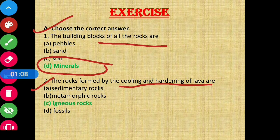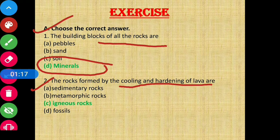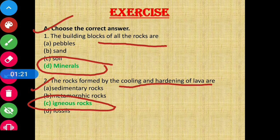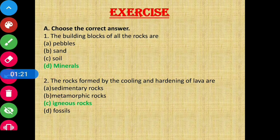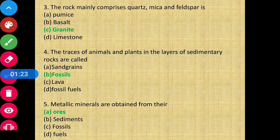Question 2: The rocks formed by cooling and hardening of lava — which rocks are formed when lava cools and then hardens? Obviously the answer will be option C, that is igneous rocks.